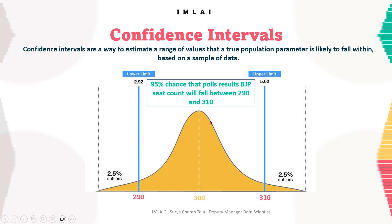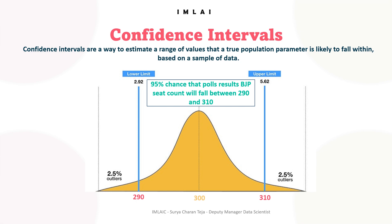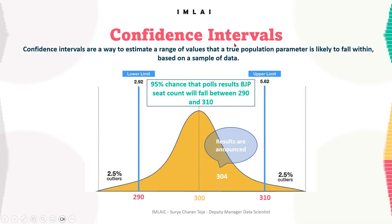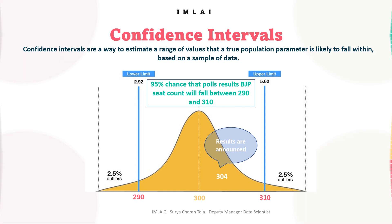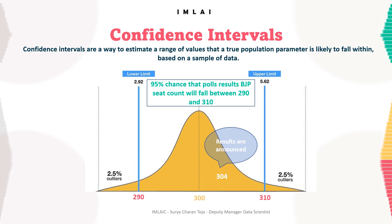Let's imagine we are in 2024 and the results are announced. After announcing the results, BJP got 304 seats — that's the true number of seats. We were 95% confident that the actual seats gotten by BJP after the results would lie between 290 and 310, and indeed 304 falls within that interval.